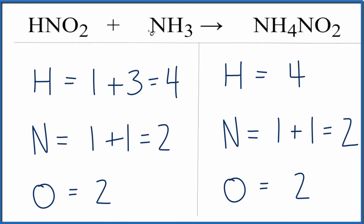So make sure you count up each instance of each atom in an equation like this. This is Dr. B with the balanced equation for HNO2 plus NH3 yields NH4NO2. Thanks for watching.